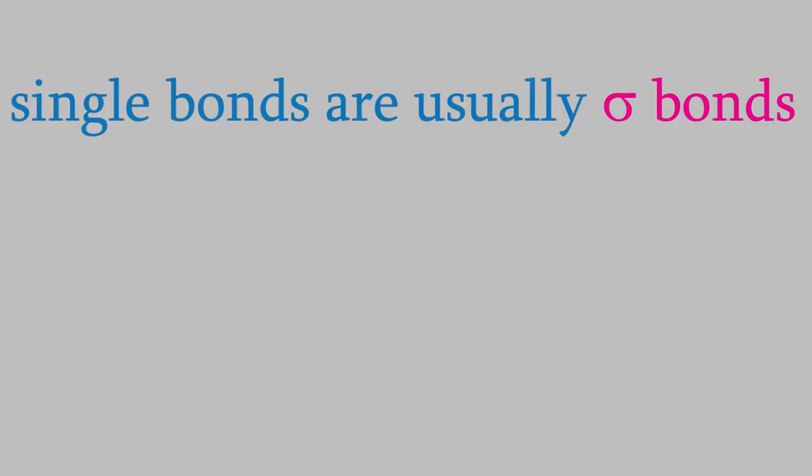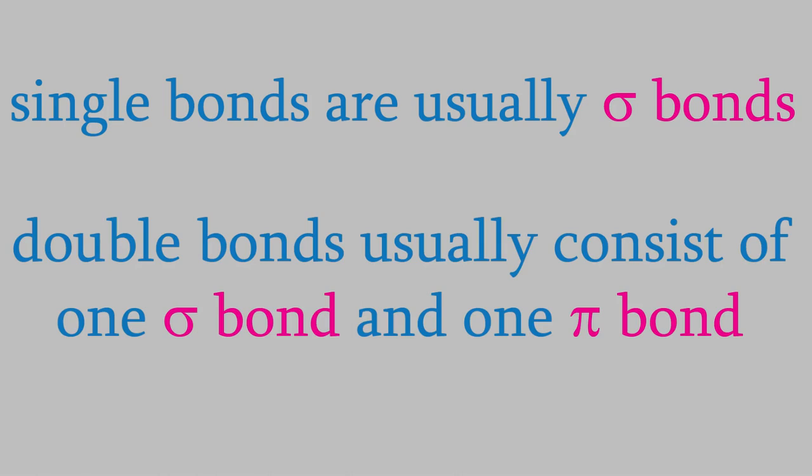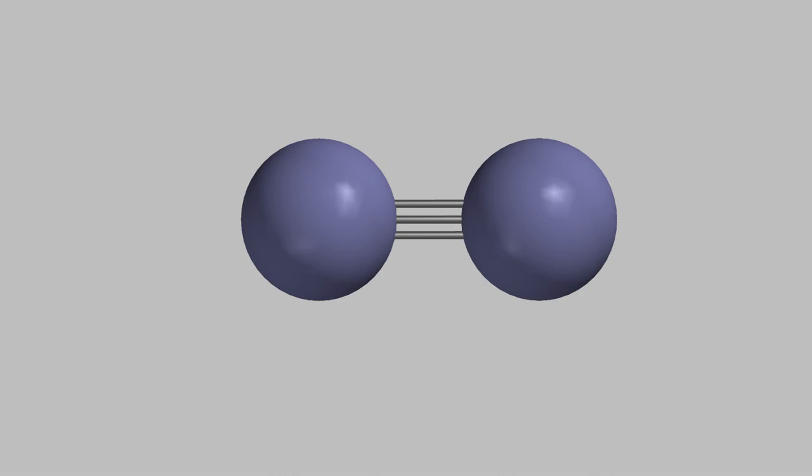So every single bond is a sigma bond, and every double bond is one sigma bond and one pi bond. What about a triple bond, like the one in a nitrogen molecule?